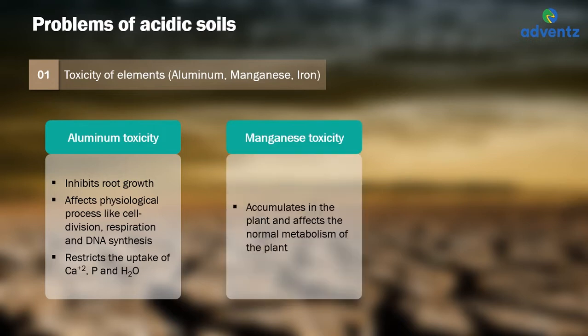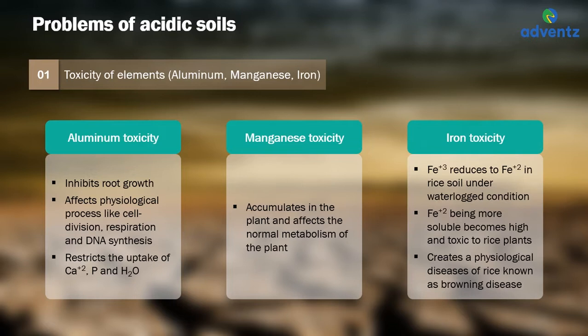Manganese toxicity accumulates in the plant and affects normal metabolism. Iron toxicity: under waterlogged conditions where rice is grown, the oxidized ferric form (Fe³⁺) is reduced to the ferrous form (Fe²⁺). Ferrous form, being more soluble, becomes excess in soil and toxic to rice plants. It also creates a physiological disease of rice known as browning disease.